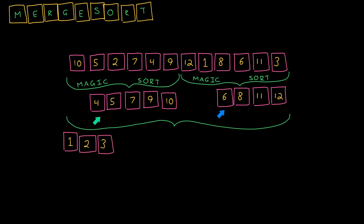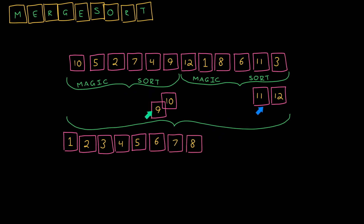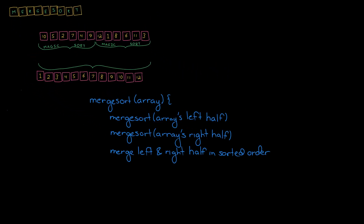What we do to sort the left half and the right half is just apply merge sort again. So we apply merge sort to the left half, apply merge sort to the right half, and merge those back in order. In order to have sorted the left half, we again apply merge sort to the left portion of that, apply merge sort to the right portion of that, and do the same thing on the other side. We do this over and over again and eventually our array becomes sorted.